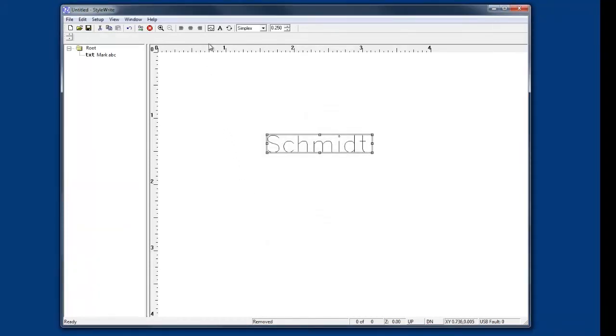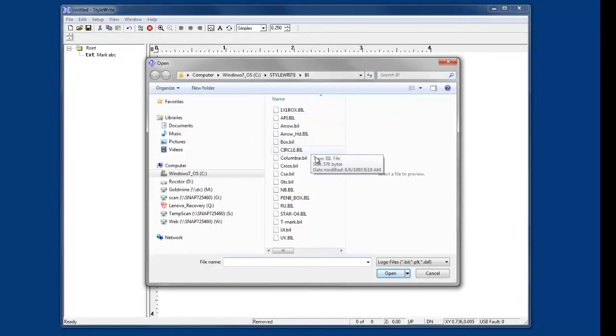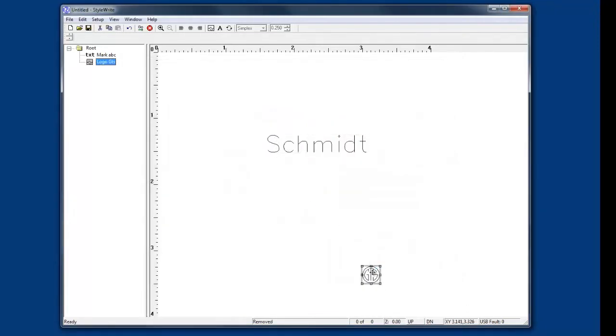If placing a logo in your mark, click the landscape icon next to the text icon and select your logo or trademark file. Select and double click or select and open to add the file to your mark window. Drag the logo to the desired mark location.